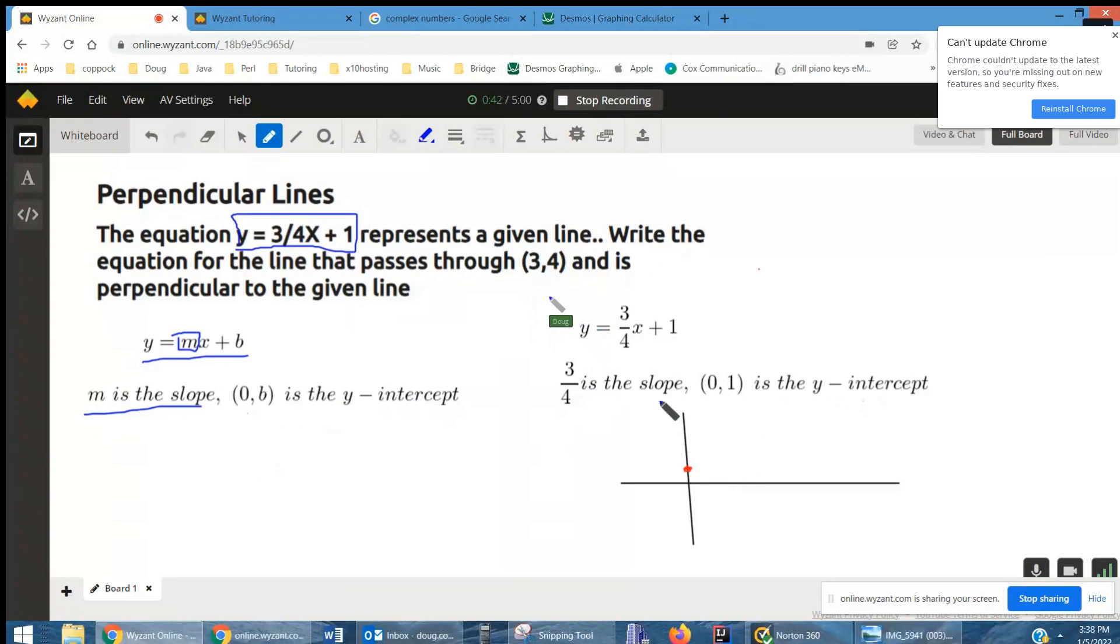So if you wanted to draw a quick sketch of this line, you'd start at the y-intercept. But rise over run, you'd take a run of four and a rise of three. And then draw the line through those two points. That's what the line looks like.